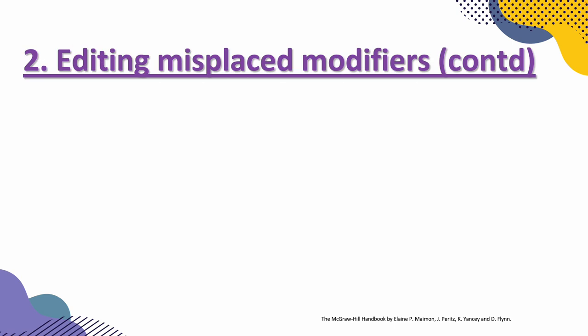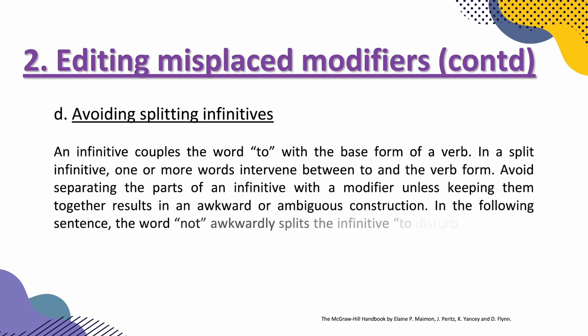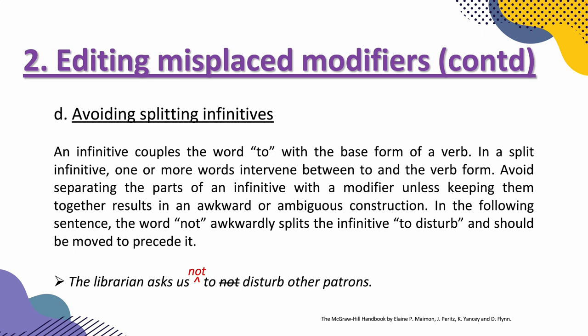Continuing with editing misplaced modifiers, we go to the fourth category: avoiding splitting infinitives. An infinitive couples the word 'to' with the base form of a verb. In a split infinitive, one or more words intervene between 'to' and the verb form. Avoid separating the parts of an infinitive with a modifier, unless keeping them together results in an awkward or ambiguous construction. Here, 'not' awkwardly splits the infinitive 'to disturb' and should be moved to precede it: 'The librarian asks us not to disturb other patrons.'